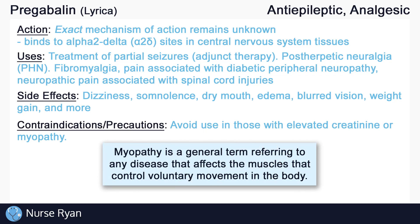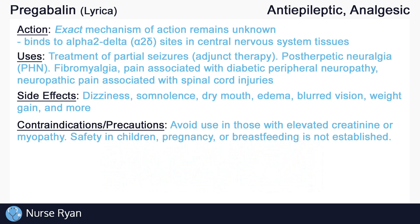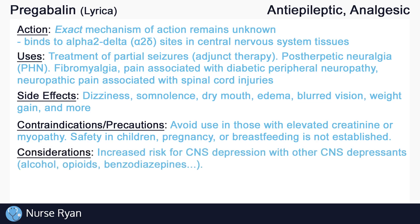Safety in children or during pregnancy and breastfeeding has not yet been established. It's important to be aware of possible interactions with pregabalin as well. There may be an increased risk for CNS depression if used with other CNS depressants, like alcohol, opioids, or benzodiazepines.